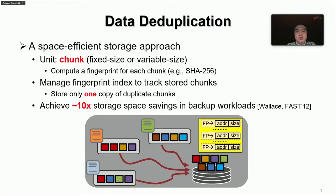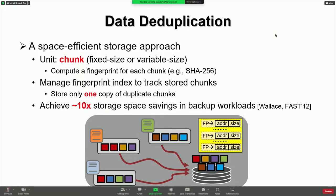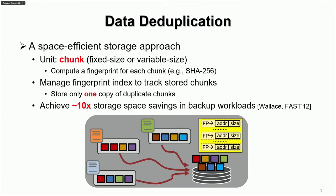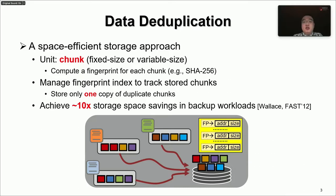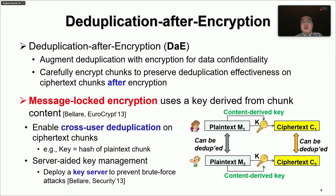Data deduplication is a common approach to realize storage efficiency. It identifies duplicates at the level of chunks. The idea is to compute a fingerprint of each chunk via a cryptographic hash function and maintain a fingerprint index to track existing chunks, which maps the chunk fingerprint to the address of each existing chunk. Given an input chunk, it checks the fingerprint index to ensure only one physical copy of a duplicate chunk is stored. According to previous studies, deduplication can achieve around 10 times storage savings in backup workloads.